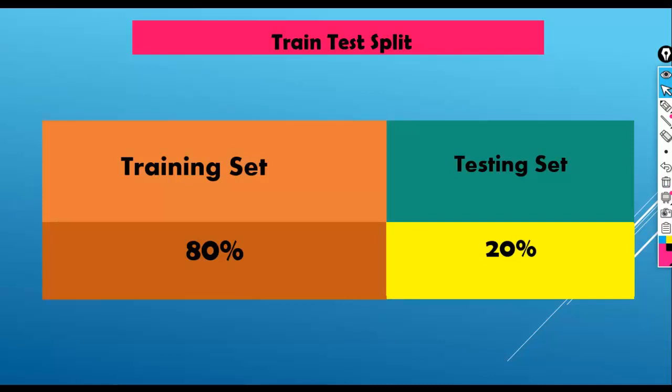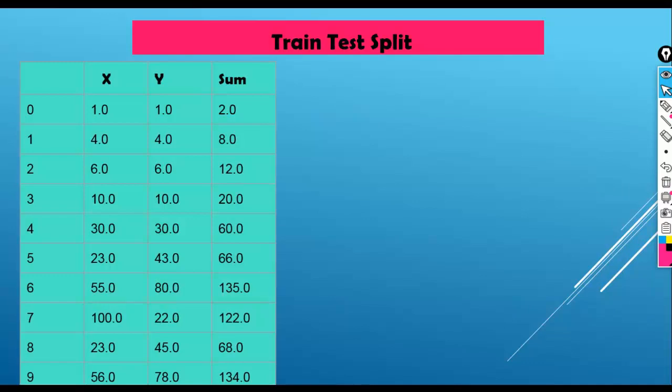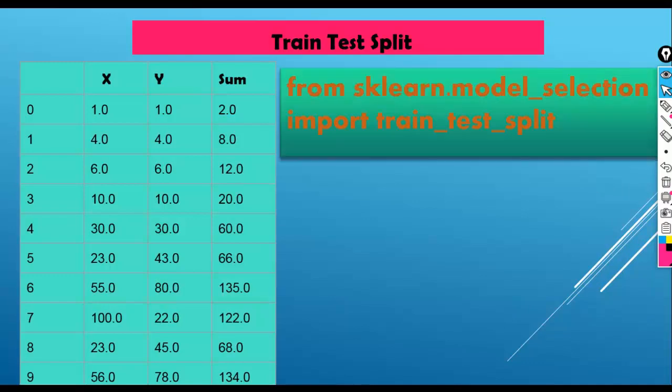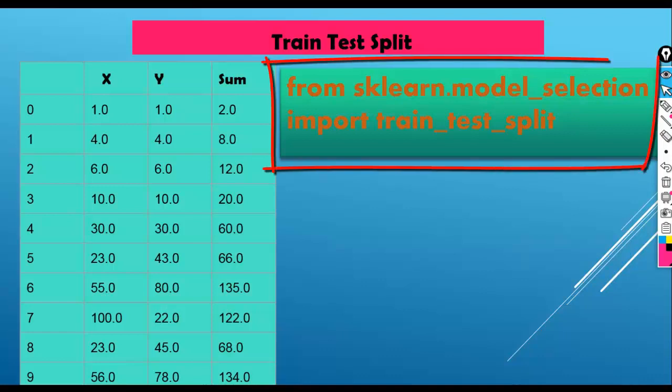We can use 80% data for training purpose and keep aside 20% data for testing purpose. For this we can use the train_test_split module of sklearn, imported as: from sklearn.model_selection import train_test_split.